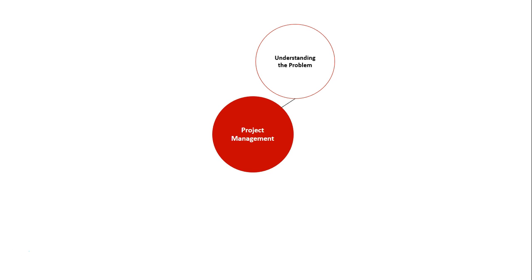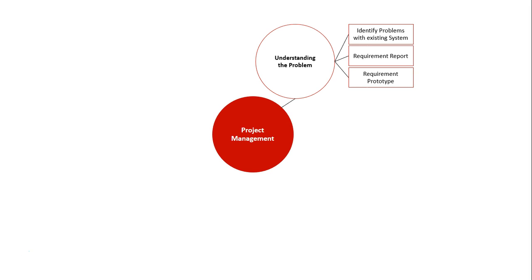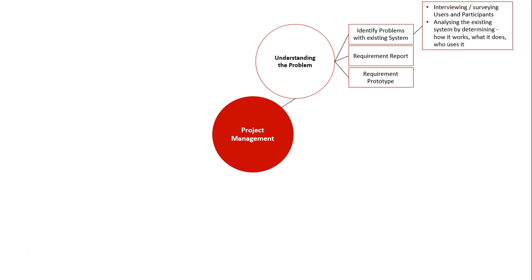We're looking at the first unit in the HSC course: project management. The first subsection is understanding the problem, which is also the first stage of the system development cycle — the traditional method of project development and really the core of this whole unit. We need to know three things: identifying problems with the existing system, developing a requirement report, and developing a working model such as a requirements prototype to get a better understanding of the existing system. This involves gathering data through interviewing and surveying users, and analysing how the system works, what it does, and who uses it.